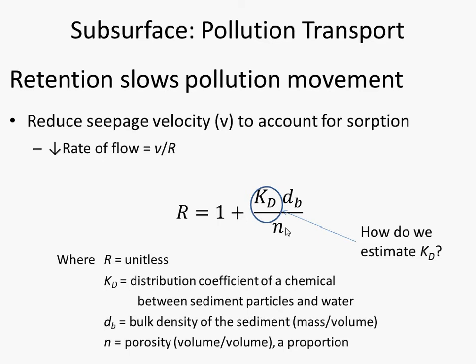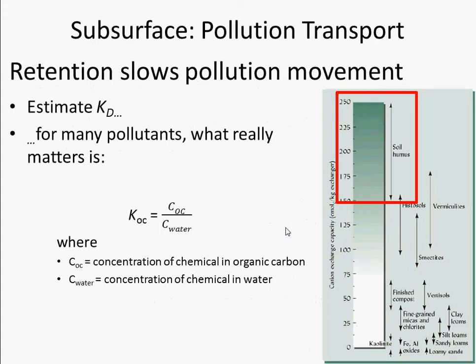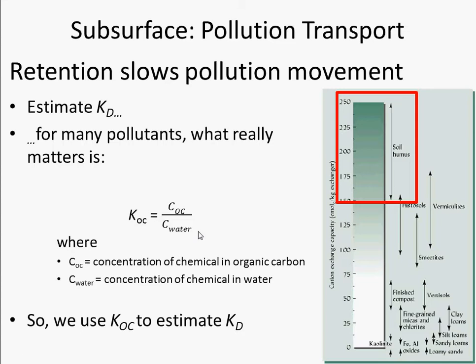For many pollutants, what really matters is not how much sticks to soil broadly, but how much sticks to organic carbon, because that's where most of the cation exchange capacity in a soil is — in the organic matter, also called soil humus. koc is the partitioning coefficient between organic carbon and soil water: the concentration of a chemical on organic carbon divided by its concentration in water. We use koc to estimate kd.